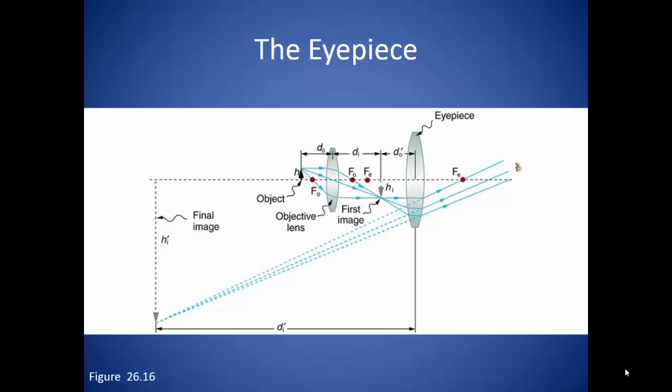The image formed from the eyepiece is virtual and inverted. The eye uses this virtual image as the object to focus on the retina. The image is also located further from the observer, making it easier to focus.